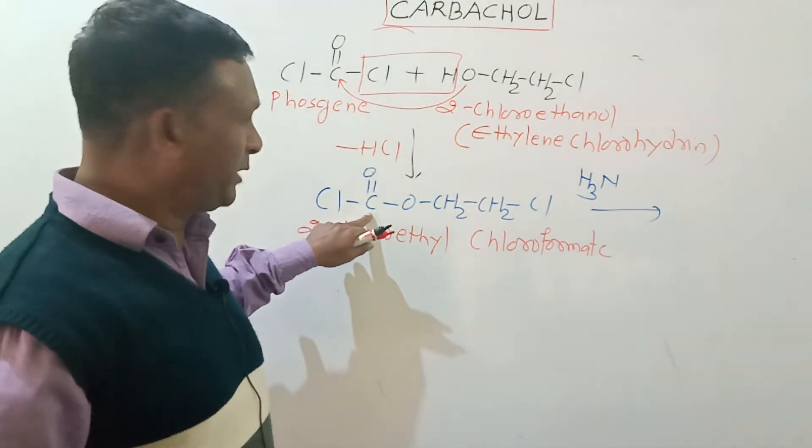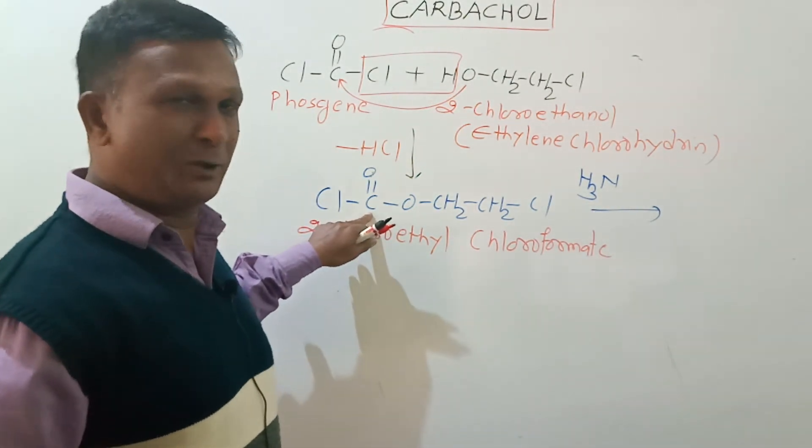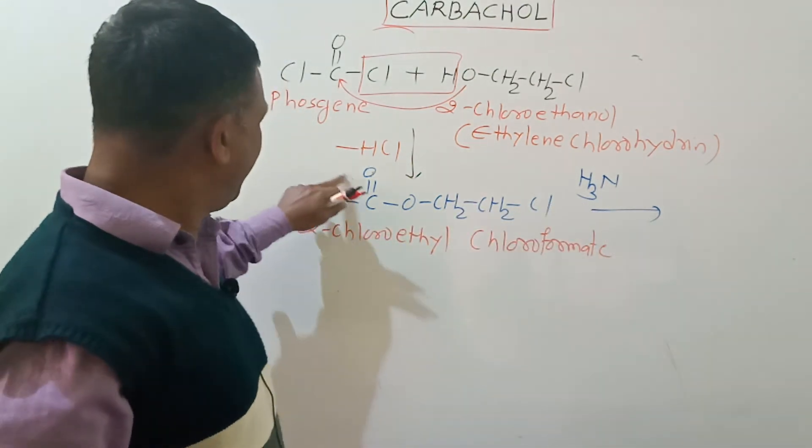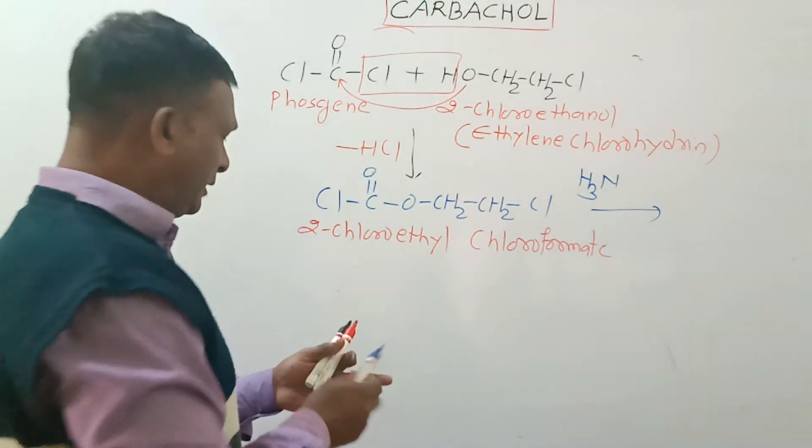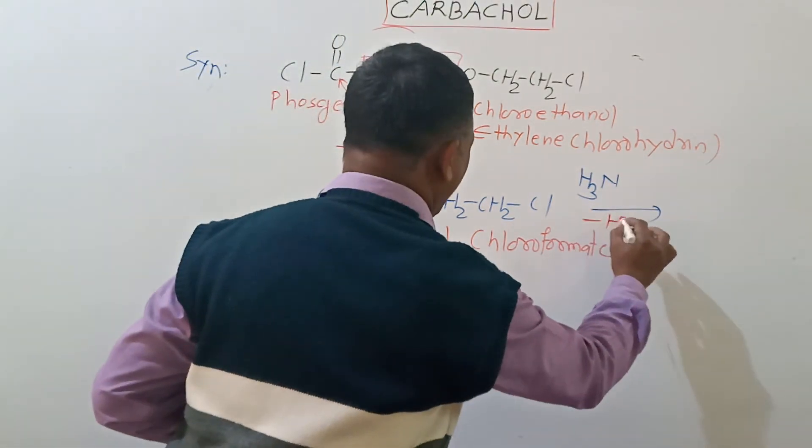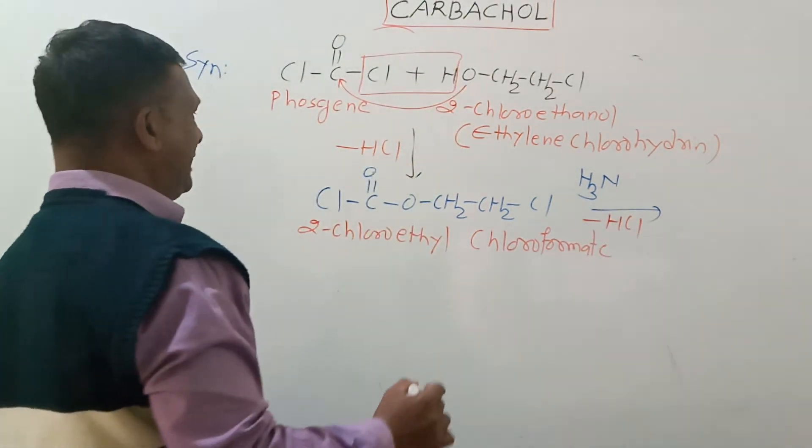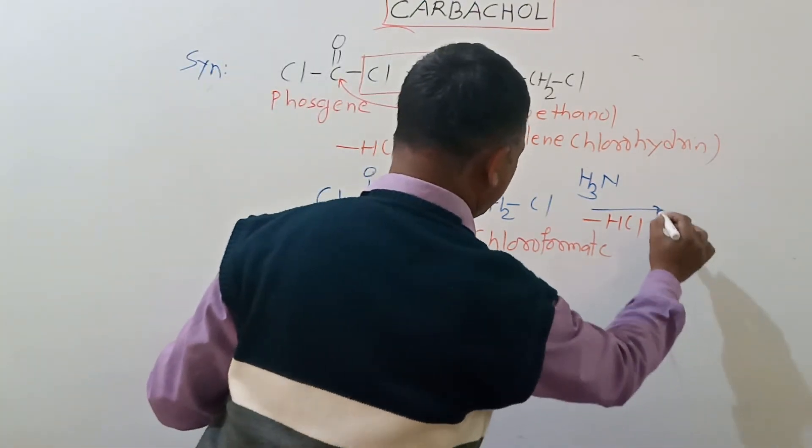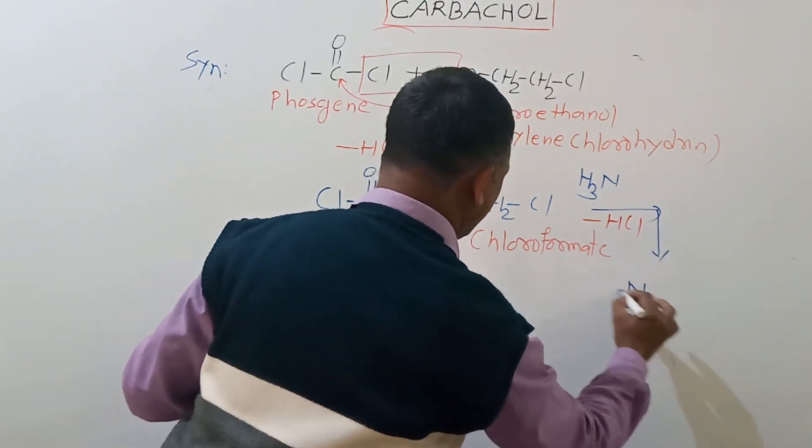Ammonia is a nucleophile which then attacks on this carbonyl carbon to bring about the nucleophilic acyl substitution reaction. So one of the hydrogens from here and this Cl will be liberated out as HCl, and this gives us the formation of this compound.